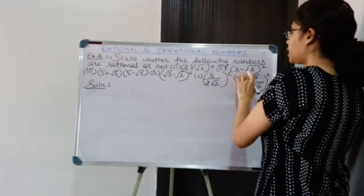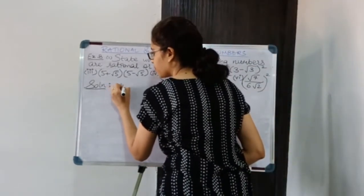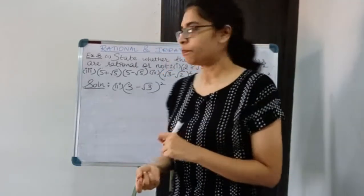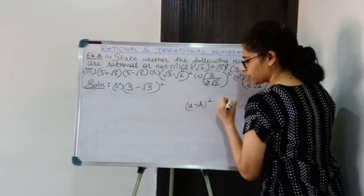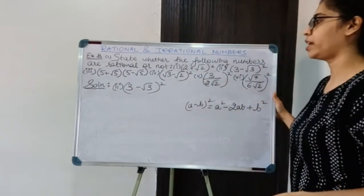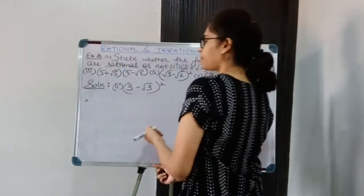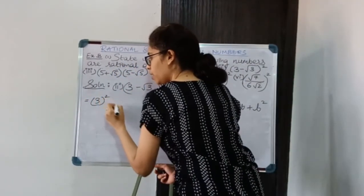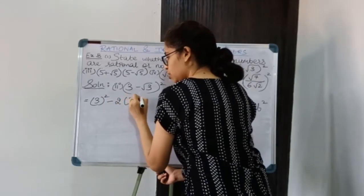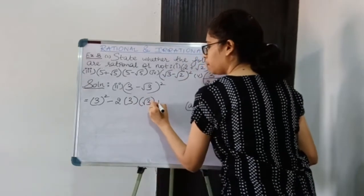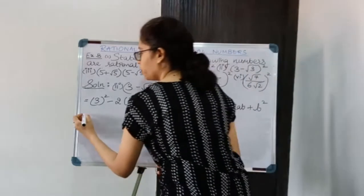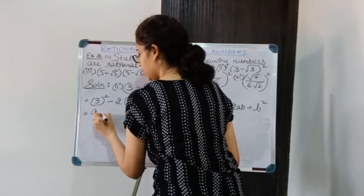Moving on to the second identity: (3 − √3)², which is of the form (a − b)². The expansion gives a² − 2ab + b². Applying it here, a = 3 and b = √3, so we get 3² − 2 × 3 × √3 + (√3)².